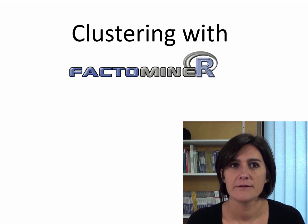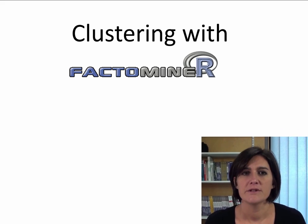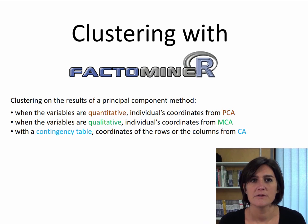In FactoMiner, clustering is done after first running some principal component method. When the variables are quantitative, individual's coordinates from PCA can be used. When the variables are qualitative, we can do an MCA and then clustering using the individual's coordinates from the MCA. If we have a contingency table, we can do a CA and use the coordinates of the rows or the columns to do clustering, depending on what exactly we want to cluster.